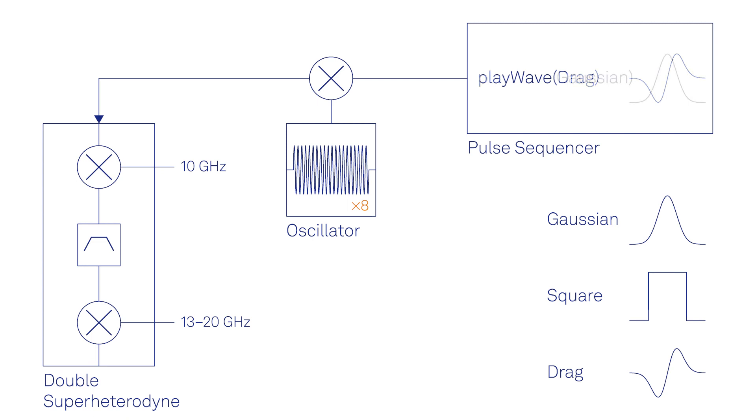the pulses are upconverted to microwave frequency with a double superheterodyne scheme. This two-stage frequency conversion and filtering technique ensures a spurious free and stable signal with 1 GHz of instantaneous bandwidth and requires no mixer calibration at all.